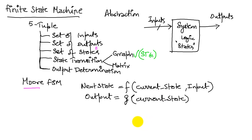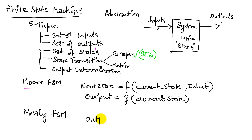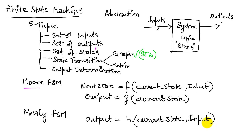What we will not be looking at in this class, but those who are curious can explore, is another kind of machine called a Mealy machine — a Mealy FSM. A Mealy FSM looks almost identical, except that it still has a next state dependent on the current state and input, but the output in a Mealy FSM is a function of not just the current state but also the input. Anything that can be done with a Mealy machine can be done with a Moore machine, so they're both equally powerful, and therefore we choose the simpler one — the Moore machine — in this course.